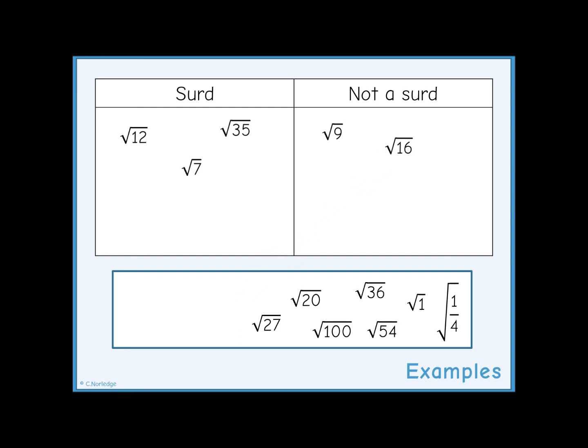Hopefully by now you should have spotted that when you square root an integer, if the number isn't a square number, then it will be a surd. So you can quickly sort most of the rest based on your knowledge of square numbers.